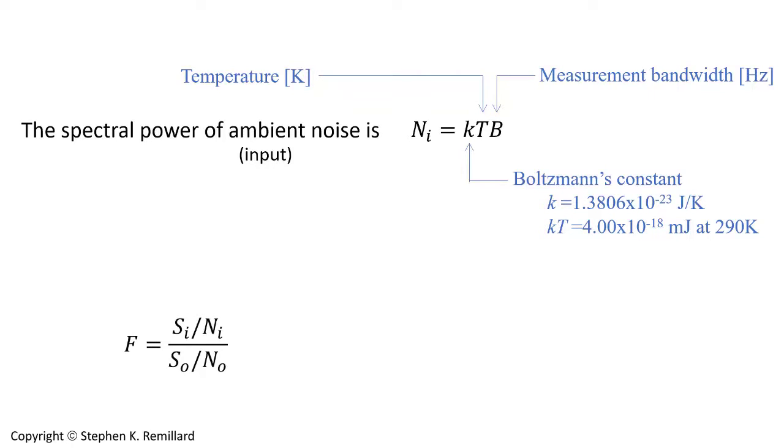We can go ahead and use this expression KTB in the definition of noise factor, the signal noise ratio at the input over the signal noise at the output, and replace n sub i the noise at the input with KTB and replace s sub o the output signal with the gain times the input signal. Cancel everything that's common and you have this expression that the noise factor is the output noise divided by gain times KTB.